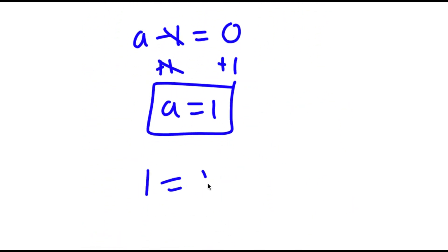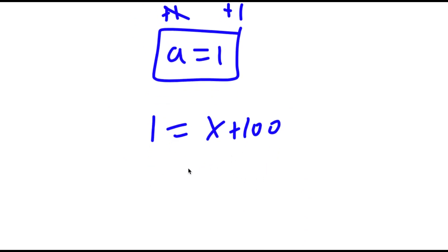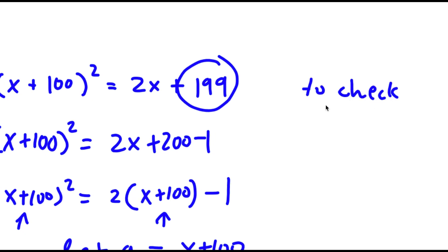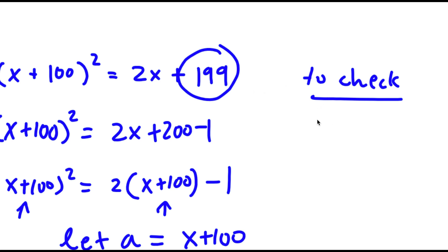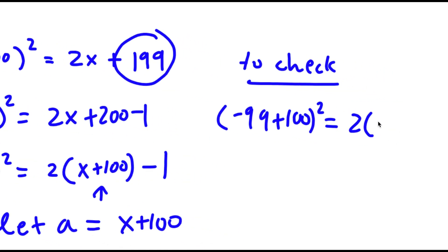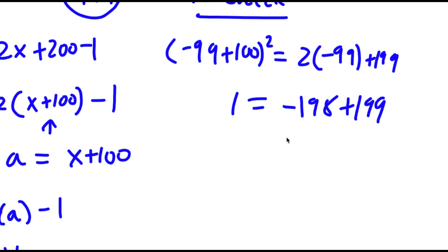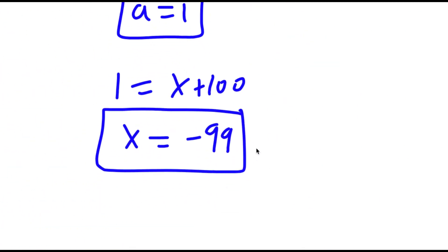Remember we set a equal to x plus 100, so 1 equals x plus 100, meaning x equals negative 99. Now to check: plugging in negative 99, I get negative 99 plus 100, squared, equals 2 times negative 99 plus 199. That's 1 squared equals negative 198 plus 199, so 1 equals 1. The solution is correct.